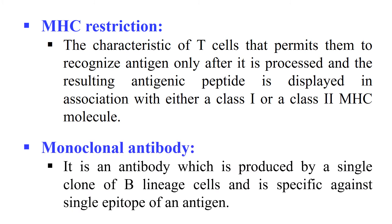Next are Monoclonal Antibodies. These are antibodies which are produced from a single clone of B cells and are very specific against a single epitope of an antigen. These kinds of antibodies are known as monoclonal antibodies.